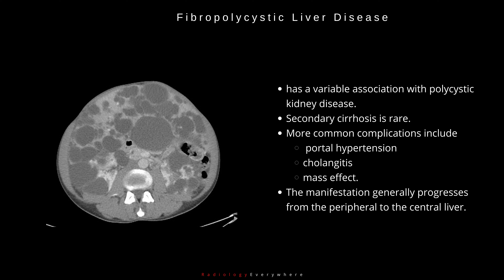Fibropolycystic liver disease has a variable association with polycystic kidney disease. Secondary cirrhosis is rare. More common complications include portal hypertension, cholangitis, and mass effect. The manifestation generally progresses from the peripheral to the central liver.